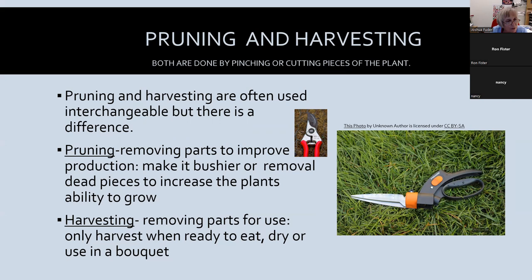Take out dead pieces when you're harvesting too. When harvesting, only remove the parts you're going to use that day — don't take more than a third, and only take what you can eat, dry, or use in a bouquet. These herbs taste best fresh. You can put some in the refrigerator, but they lose flavor. Basil cannot go in the refrigerator — it will turn black. Parsley can stay at room temperature in a glass of water for a bit, but it's best to just harvest what you'll use that day.